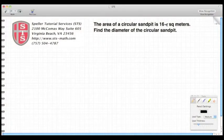Welcome back to Speller Tutorial Services. Today we're talking about word problems, and we're going to begin with the word problem defined above. The word problem asks or states the area of a circular sandpit is 16 pi square meters.